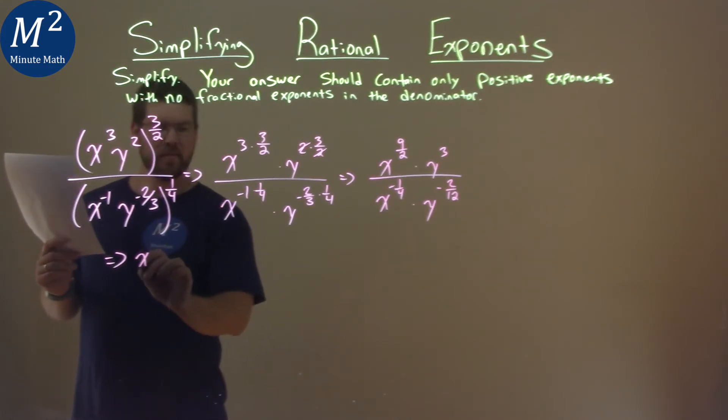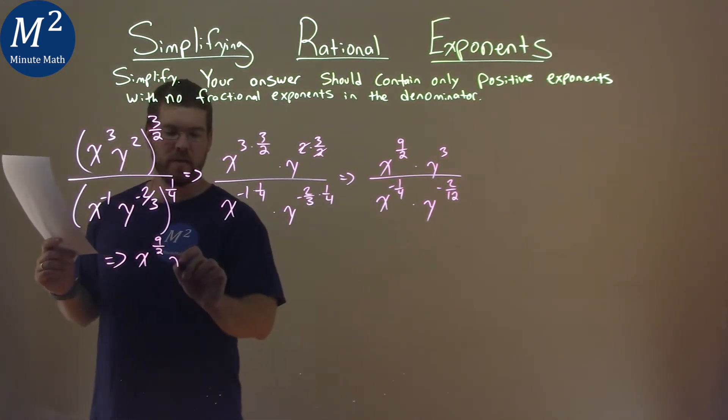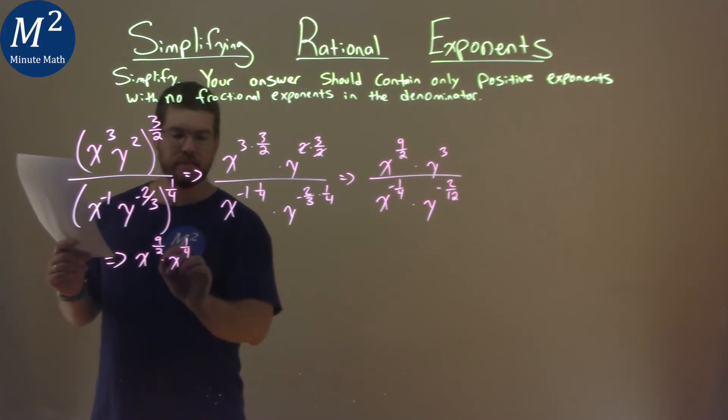So we have x to the nine-halves, and then we bring the negative one-fourth power to the numerator as x to the positive one-fourth power, all being multiplied.